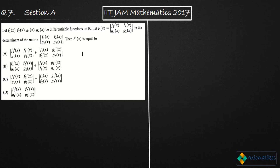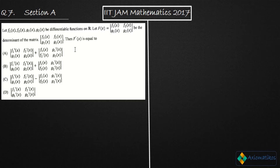The question says: let f1, f2, g1, g2 be differentiable functions on R. They are defining another function capital F(x), which is equal to the determinant of the matrix [f1, f2; g1, g2]. Then they are asking us about the derivative of this determinant.